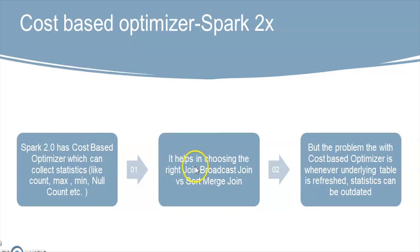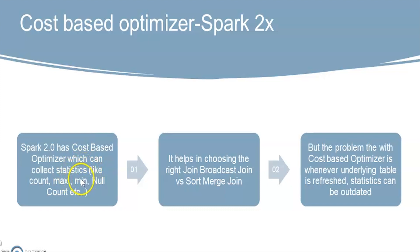In Spark 2x, CBO has the feature to choose the right join — whether it is a sort merge join or a broadcast join. It has the intelligence to choose the perfect join. However, one disadvantage of CBO is that although we collect all the statistics, if the table is refreshed, whatever statistics we have are outdated. Any new user querying the table won't get the full advantage and may see dirty data or unexpected query performance.